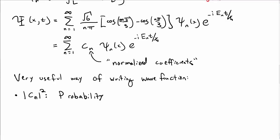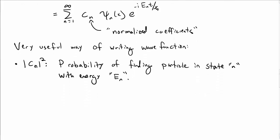In particular, the absolute value of c sub n squared correspond to the probability of finding the particle in the state n with a particular energy e sub n. We'll talk about why that is later in the course, but for now, we're just going to use that.